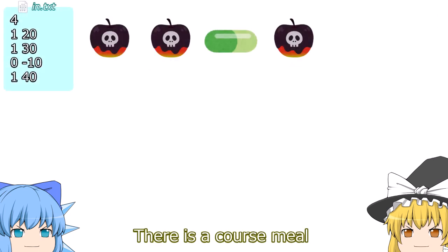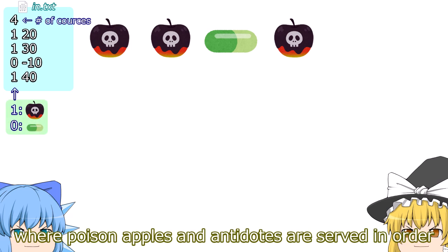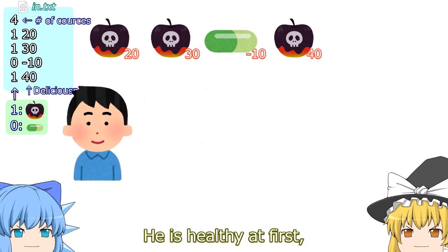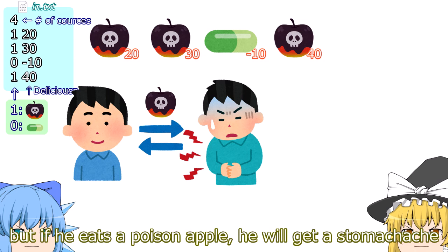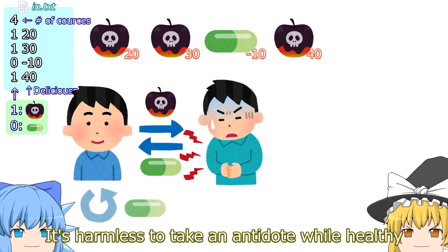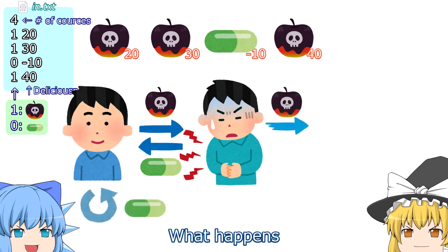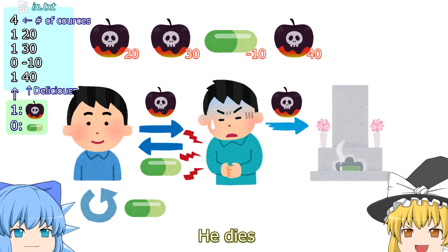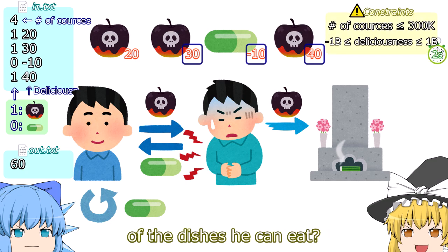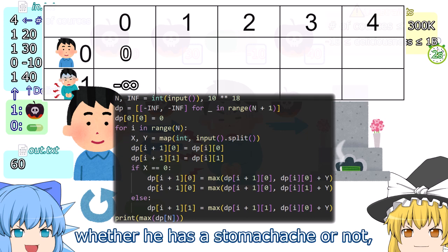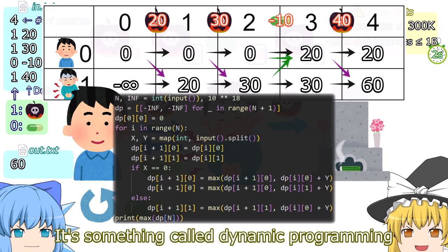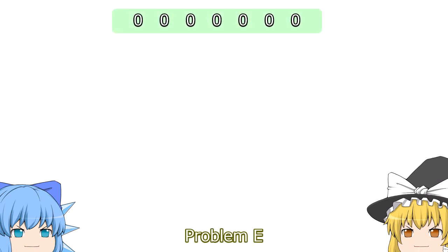Problem D: there is a course meal where poison apples and antidotes are served in order. Each dish has a defined deliciousness. Taro can choose whether to eat each one. He is healthy at first; eating a poison apple gives him a stomachache, an antidote while sick cures him, and an antidote while healthy is harmless. Eating a poison apple while already sick causes death. Maximize total deliciousness without dying. Since there are only two states — stomachache or not — use dynamic programming with a table based on that.